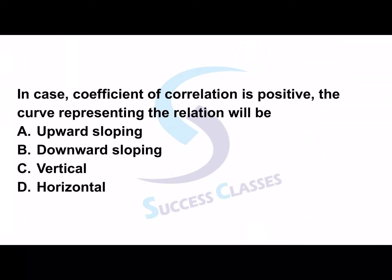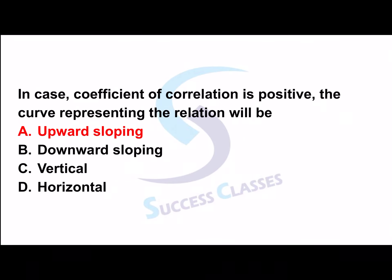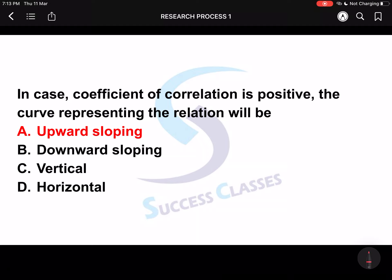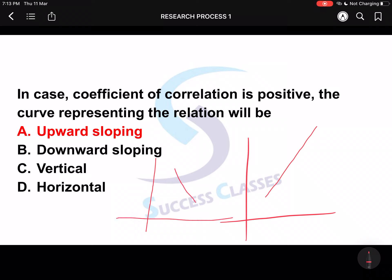Next question: In case the coefficient of correlation is positive, the curve representing the relation will be — upward sloping, downward sloping, vertical, or horizontal? If the correlation coefficient between two variables is positive, and you represent that relationship on a graph, you will get an upward sloping curve. Upward sloping. And a negative correlation would give a downward sloping curve.